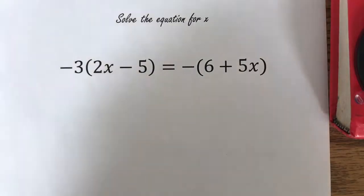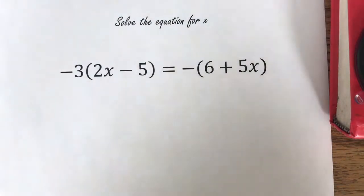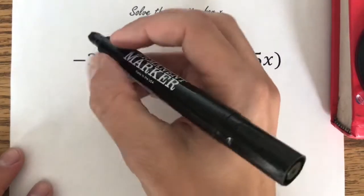All right, distributive property everywhere. We have negative 3 multiplied to a parenthesis. We also have just a regular old negative multiplied to a parenthesis. So let's get to it.